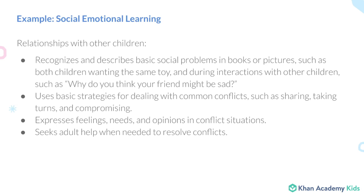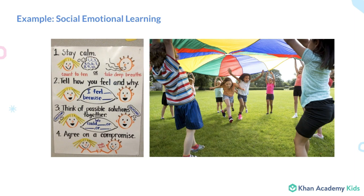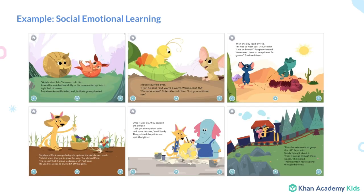Our final example is around social-emotional learning: recognizing basic social problems in books or pictures and learning how to resolve conflicts. There's really no substitution for the rich interactions and conversations between peers and with adults that happen on the playground and in the classroom. We're inherently a bit limited with technology and don't intend to replace those real-world experiences. We've worked with educators from the Lab Preschool at Stanford to understand common social interactions and inner issues that arise, and we weave themes about friendships, patience, and persistence in facing fears into our original stories and books.